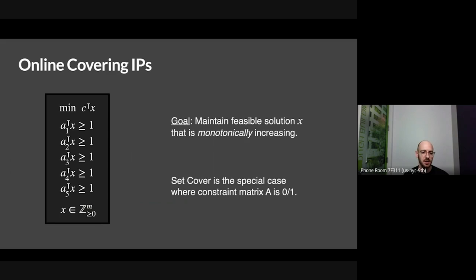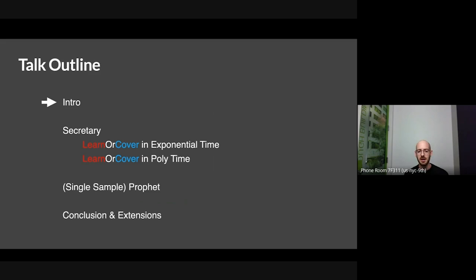The structure of the talk is: I'll spend most of the time talking about the random order or secretary model — that's the meat. Then it turns out the profit problem reduces to the secretary version, so I'll spend a few minutes afterward. That should be enough to give you a sense of how the profit result goes.